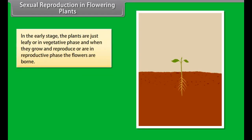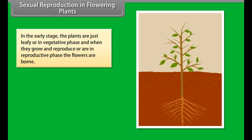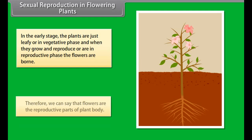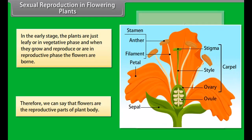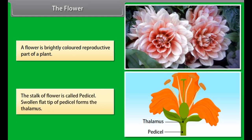In the early stage, plants are in a vegetative phase — just leafy. When they grow and enter the reproductive phase, flowers are born. Therefore, flowers are the reproductive parts of the plant body. A flower is the brightly colored reproductive part of a plant.